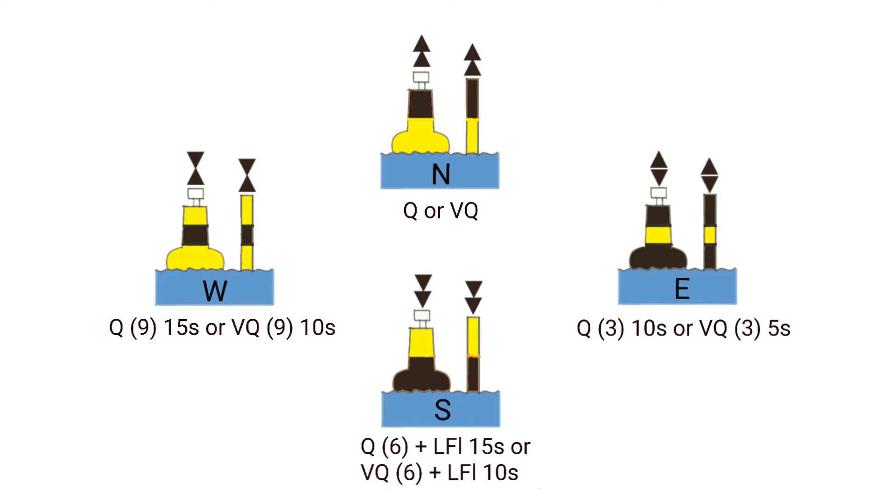And the two cones on the south cardinal boy both point down in the direction of south on a chart. The cones on a west cardinal boy point together, and they're reminiscent of a wine glass. So think wine for west. And by default, the two cones on the east cardinal boy point outwards.